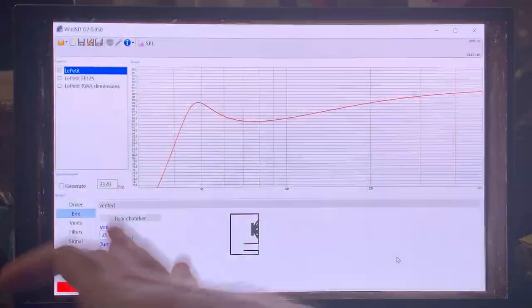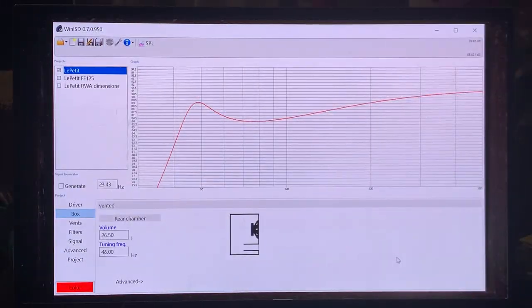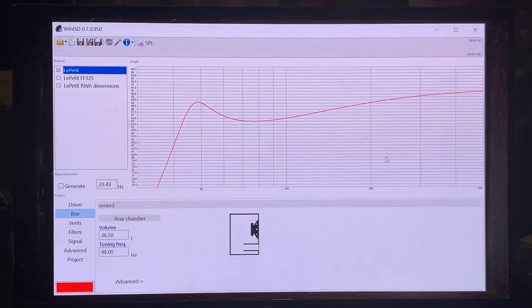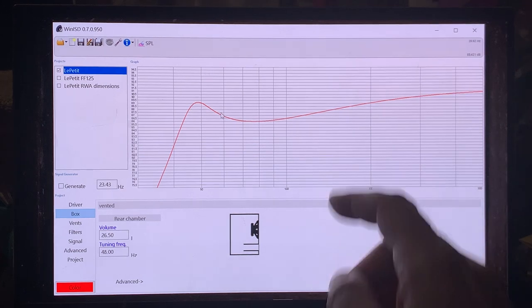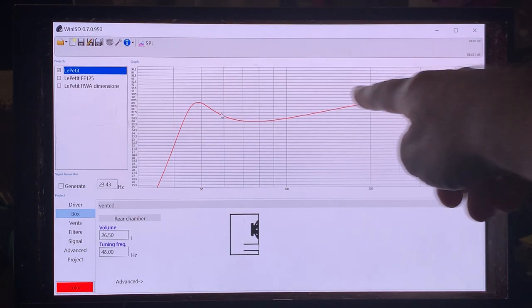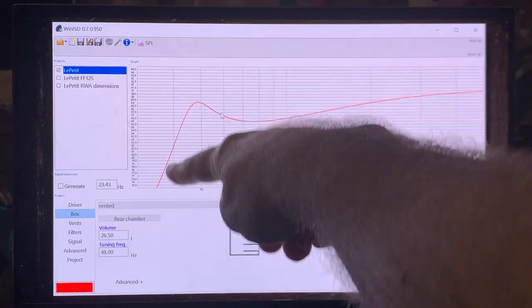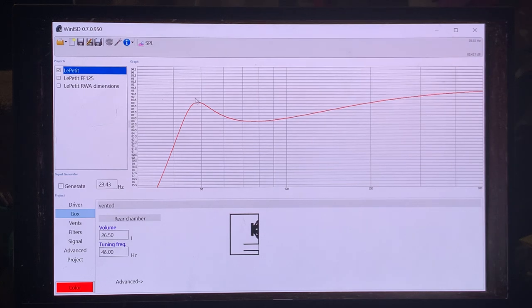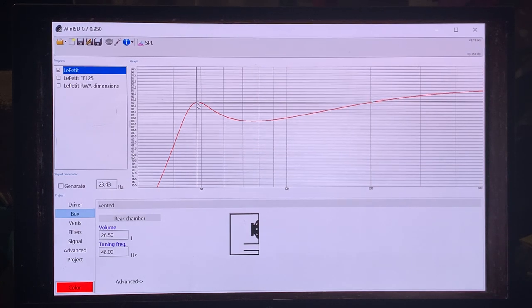So first let's just look at our WinISD model. When we look at Lepeti with the original speaker cabinet volume, this is the SPL output from 500 Hz down to here we have, this is the 40 Hz line, and it ends at 30 Hz. So that's the frequency plot there, and that's the original Lepeti with the FE103 Sigma driver.